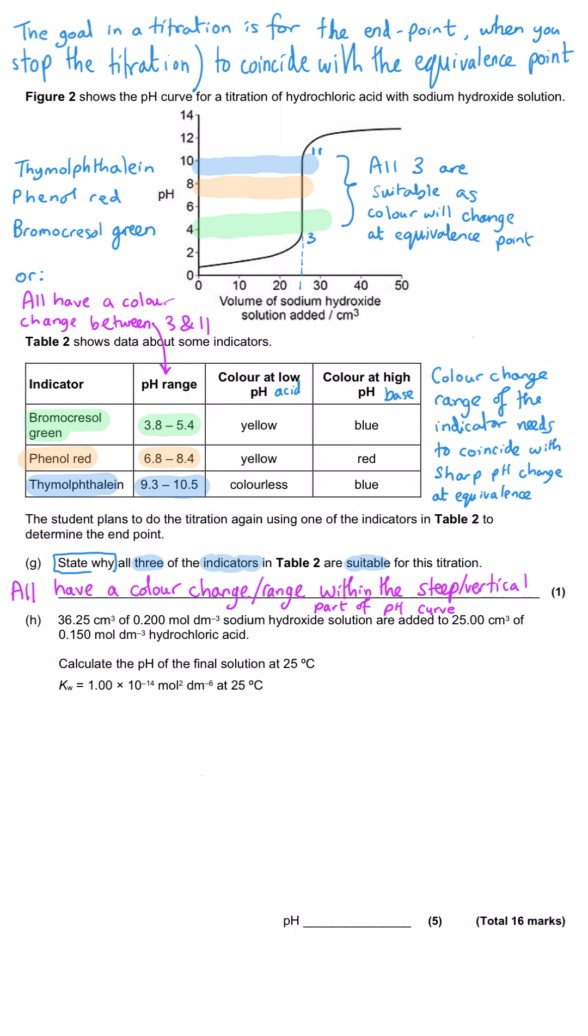Finally, we're asked to do another calculation. We're told that we've got a certain volume and concentration of sodium hydroxide solution added to 25 cm3 of a certain concentration of hydrochloric acid, and we're asked to calculate the pH of the final solution at 25 degrees C. We're told the Kw value at 25 degrees C as well. When you're told a Kw value when you've been commanded to calculate a pH, that's really a clue that the final pH is going to be a basic pH above 7. What you have to do is work out the amount in moles of each of these two reagents first.